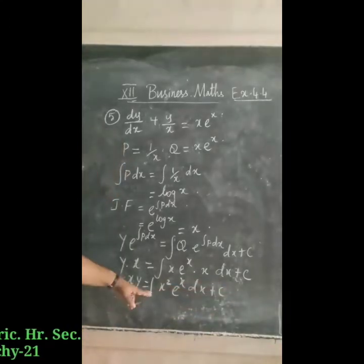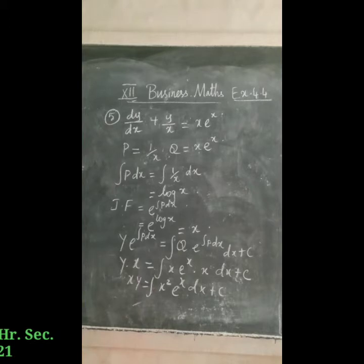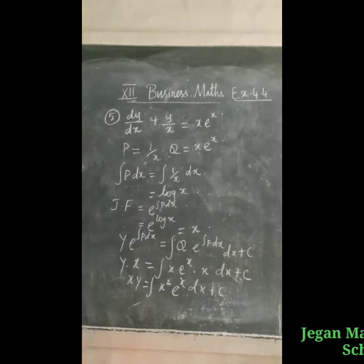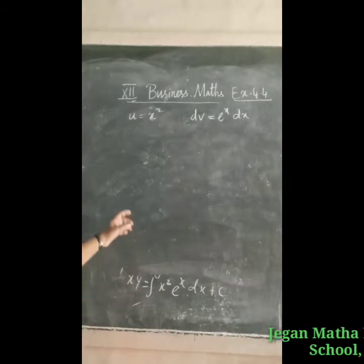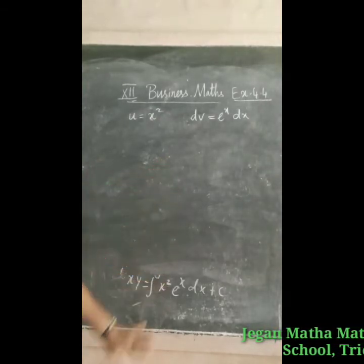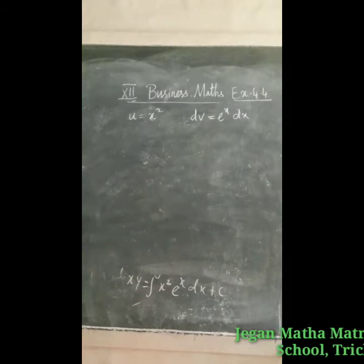Since we have x²·e^x, we need to use Bernoulli's formula, that is the u dv method. The formula is: integral of u dv = uv − u′v₁ + u″v₂. Let u = x² and dv = e^x dx.